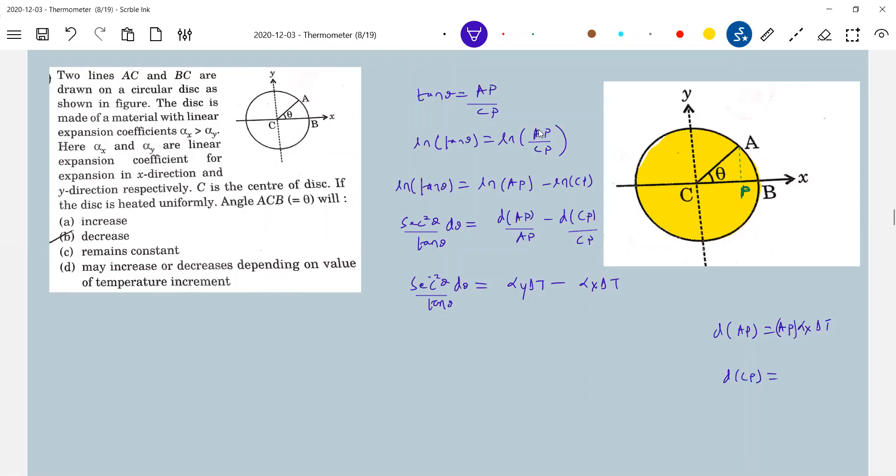So derivative of AP, similarly dCP, should be equal to l into alpha y delta t. So what is that given for us? Alpha x greater than alpha y. So what do we expect? d theta will be negative as alpha x greater than alpha y. This will be your answer.